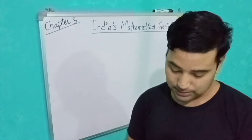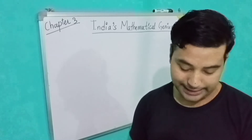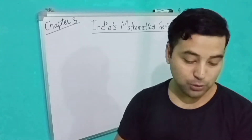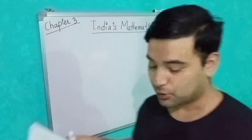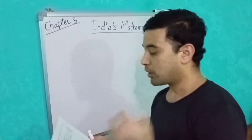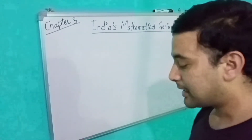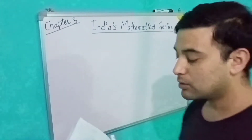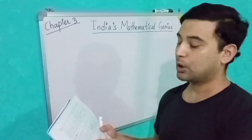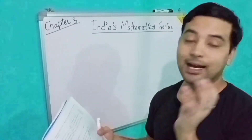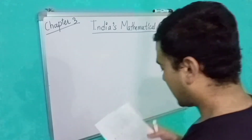And on page number 17, tick right the correct option — I have done that. We have completed this, and now let's proceed towards question and answers. Let's do that.